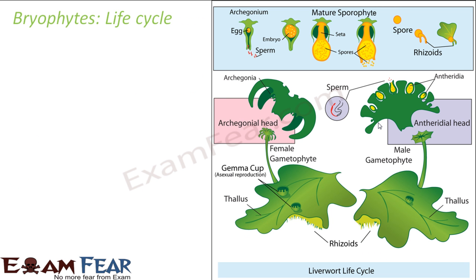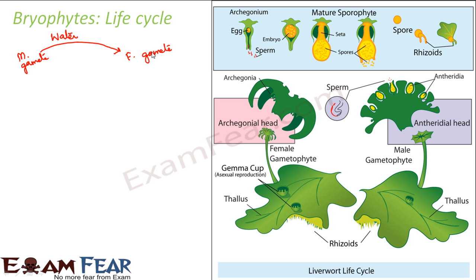Now let us see how exactly the sexual process takes place. Water is something which is extremely needed for the survival of a bryophyte. Water carries the male gametes to the female gamete. The male gametes are motile but the female gamete is not motile, so water transports the male gamete to the female gamete. Once the male gamete reaches the female gamete, fusion will take place and as a result a zygote will be formed.